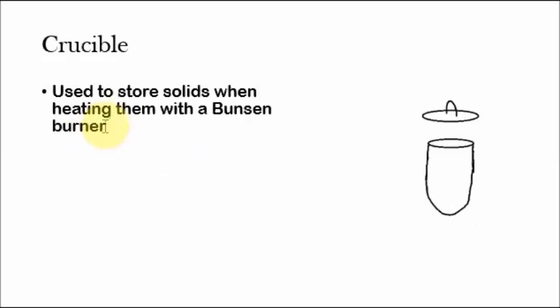A crucible is used to store solids whenever heating them in the Bunsen burner. So basically you put whatever you were trying to heat into the substance into the crucible, you'd cap it off and then just put it in the flame.